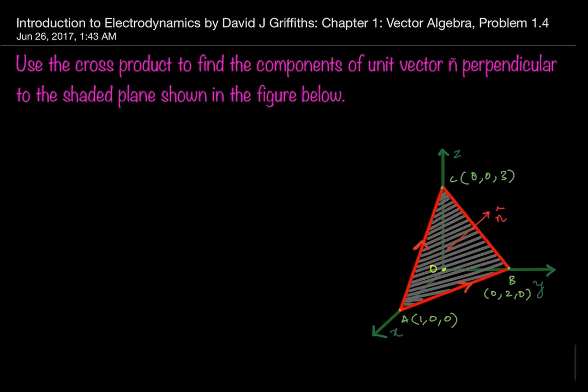Hi there, today we will be solving problem 1.4 from the chapter vector algebra. Use the cross product to find the components of unit vector n perpendicular to the shaded plane in the figure below. In the figure the vertices of the shaded plane are marked and the shaded plane is indicated by the gray lines.